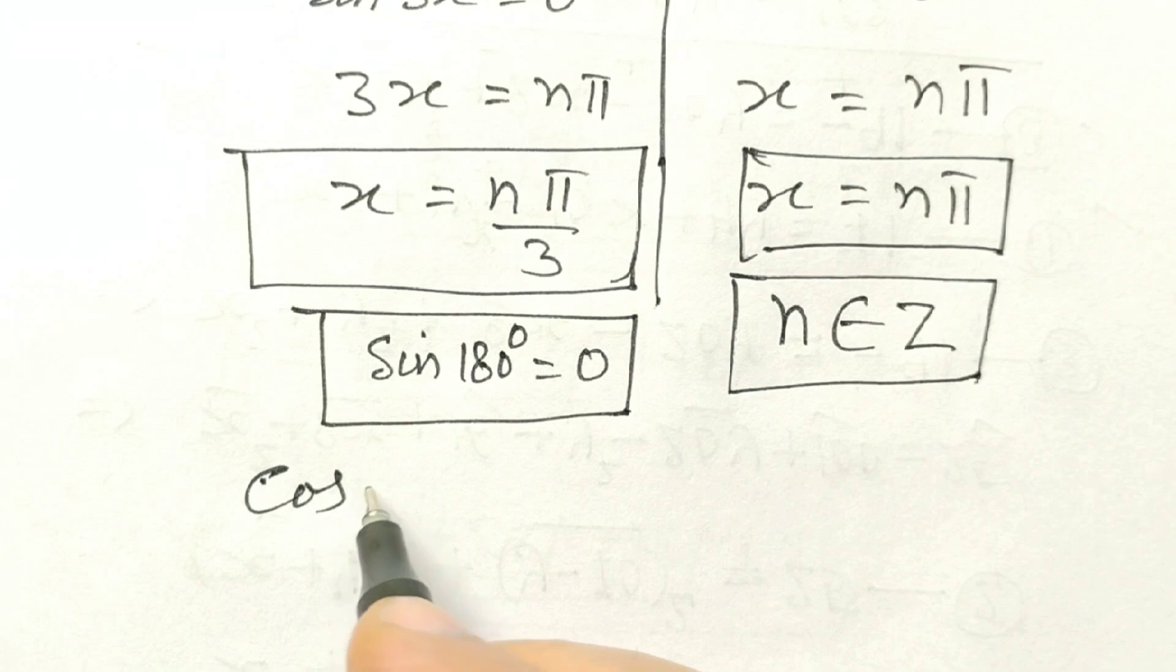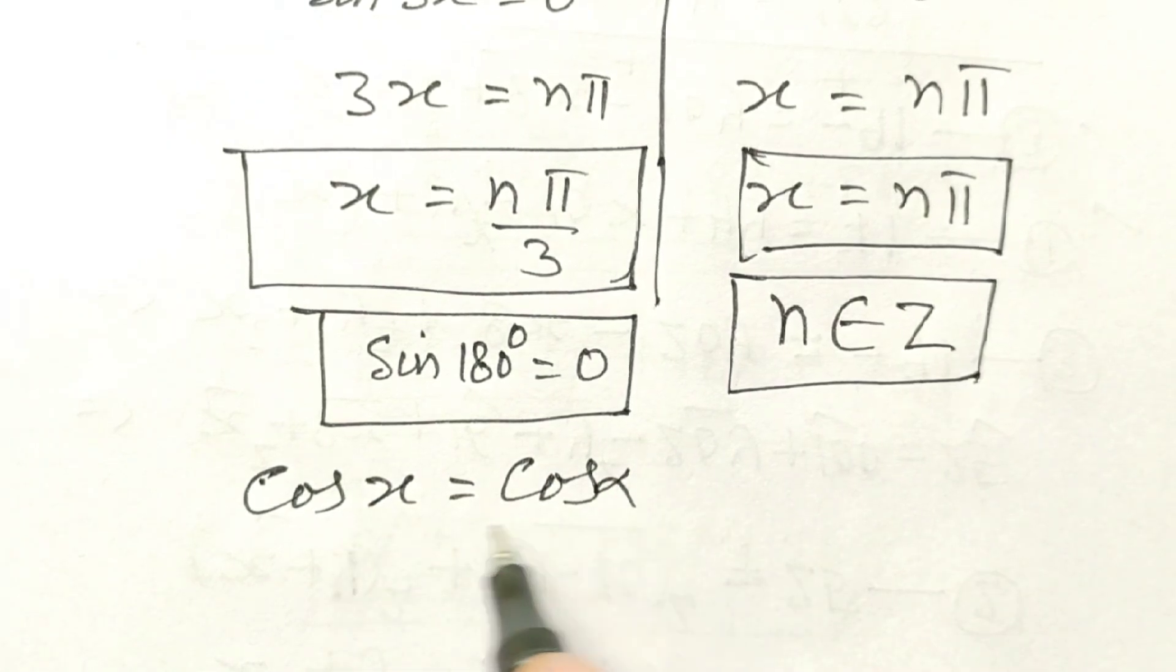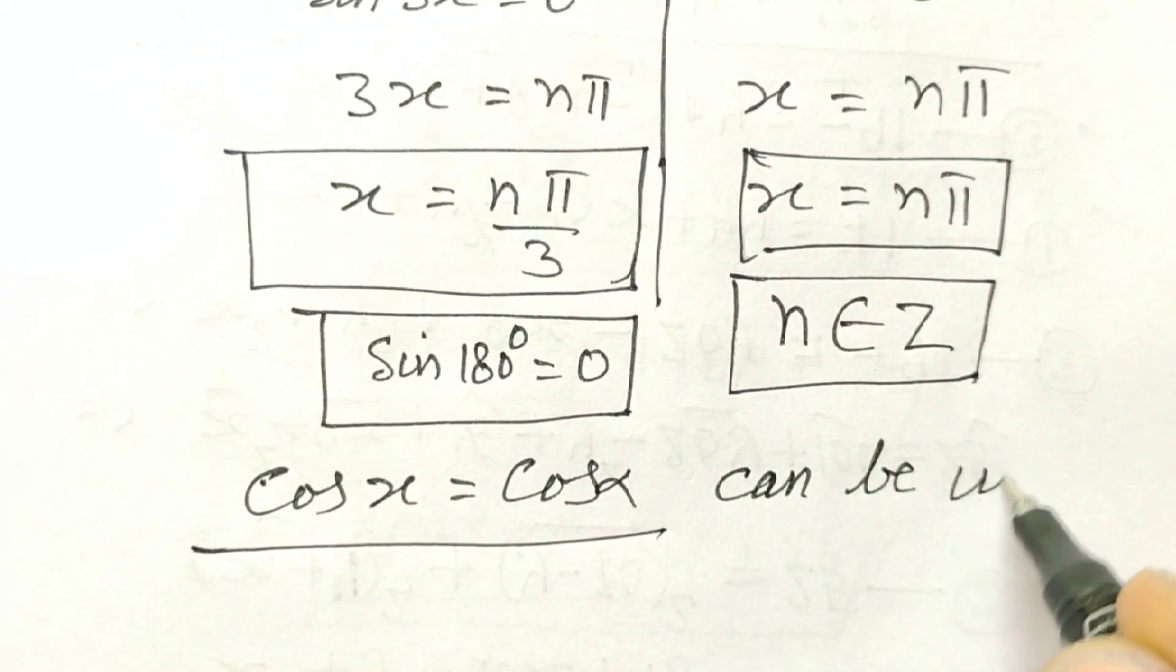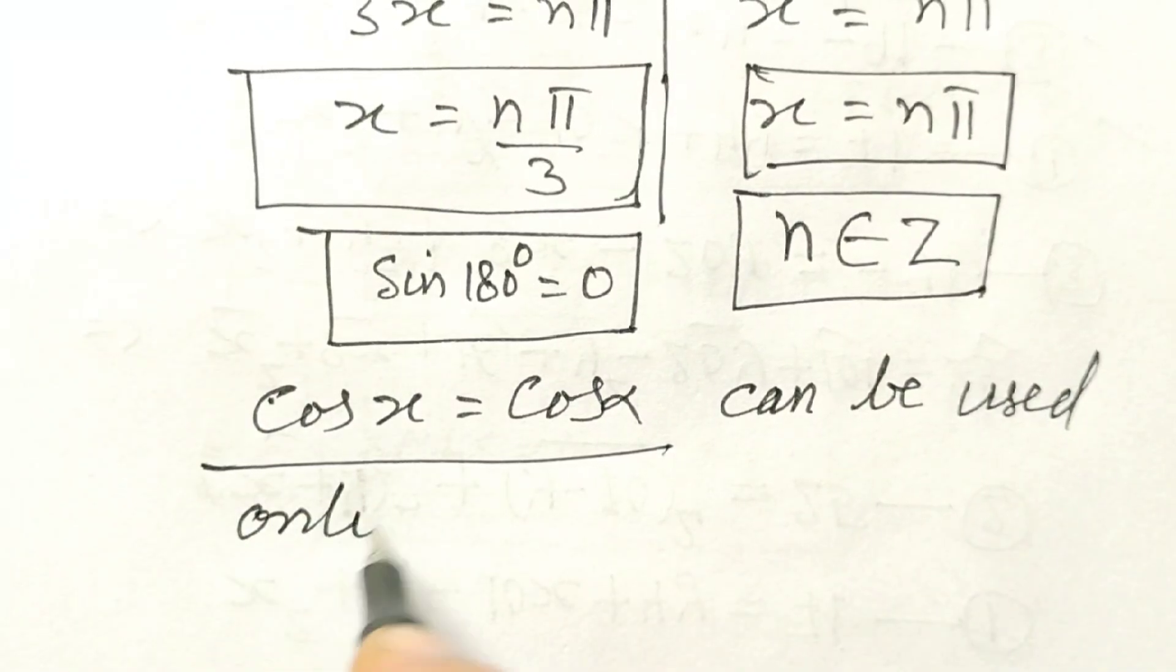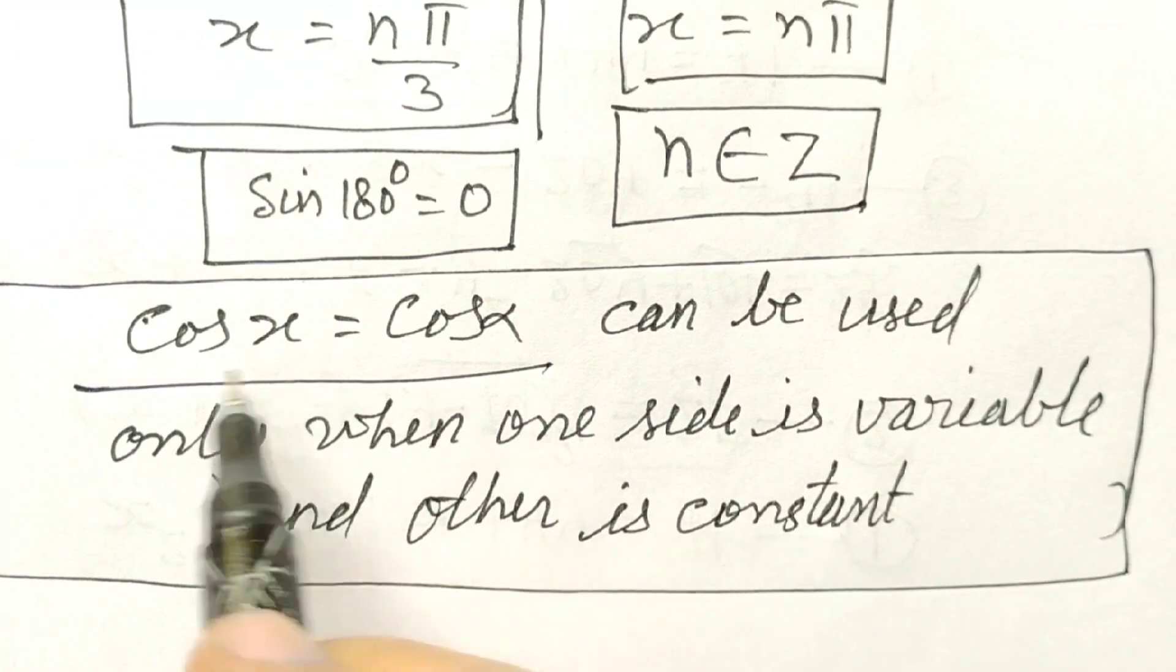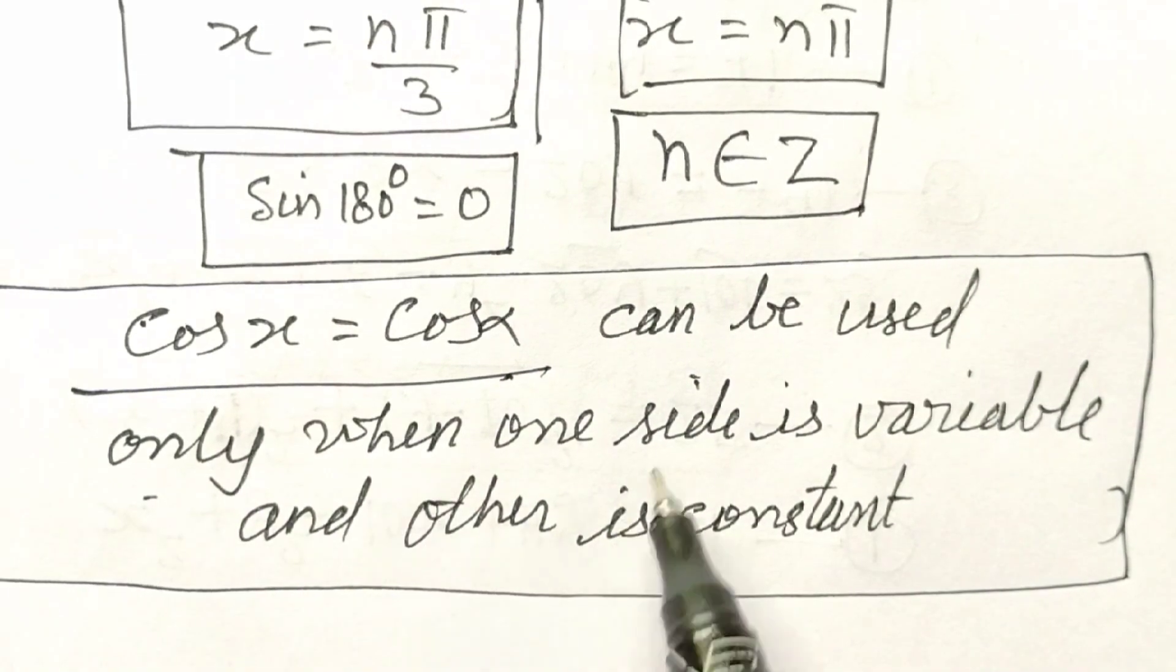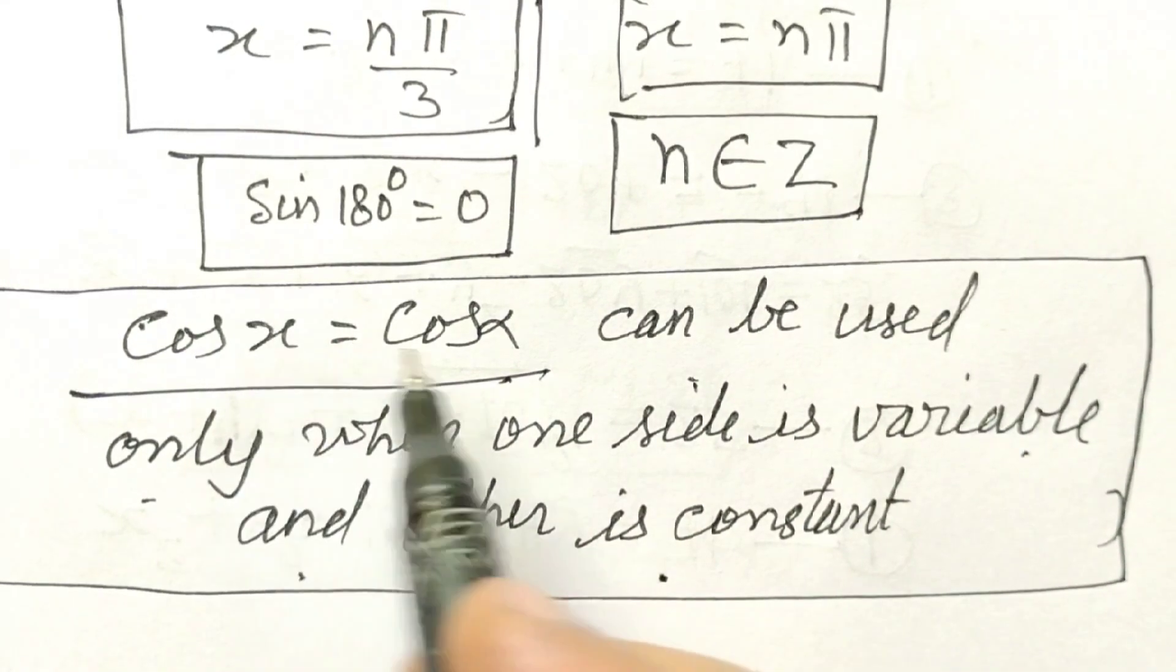Cos x is equal to cos alpha. Please note this. This can be used only when one side is variable and other is constant.